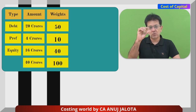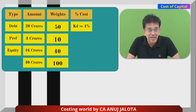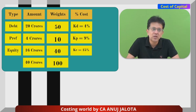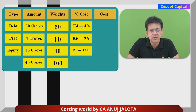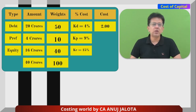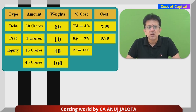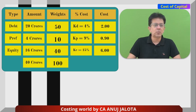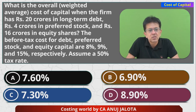So 40 crores is divided in the ratio 20:4:16. The percentage cost for debt is 4% (after-tax), for preferences it was given as 9%, and for equity it was given as 15%. Now multiply weights by percentage costs: 50 × 4% = 2%, 10 × 9% = 0.9%, and 40 × 15% = 6%. The total weighted average cost = 6 + 2 + 0.9 = 8.9%.